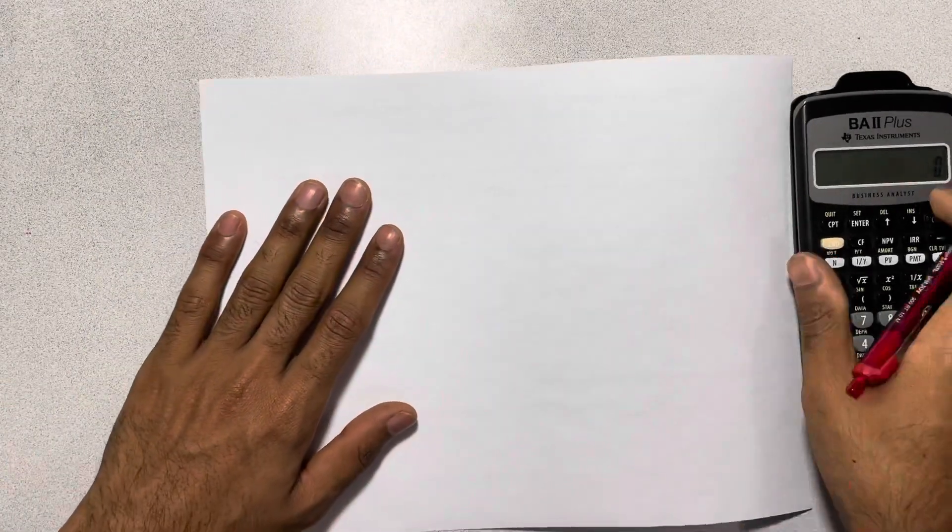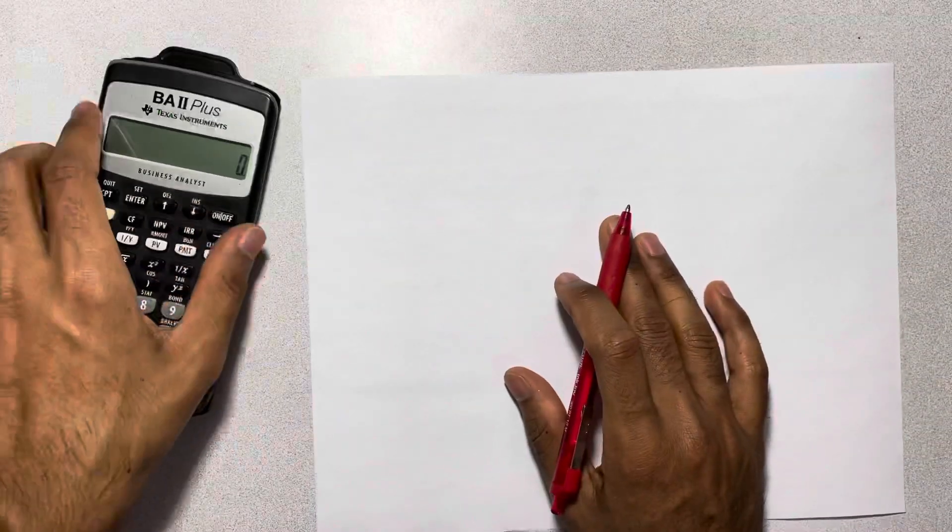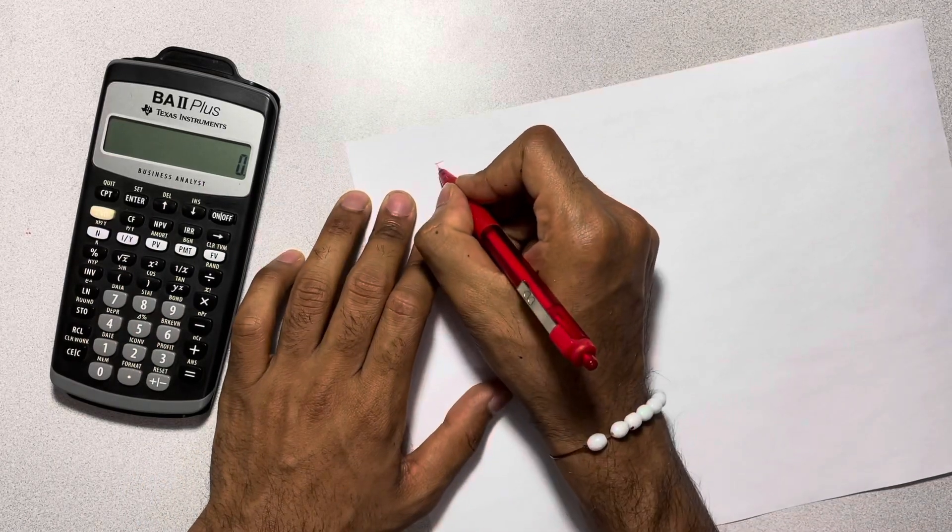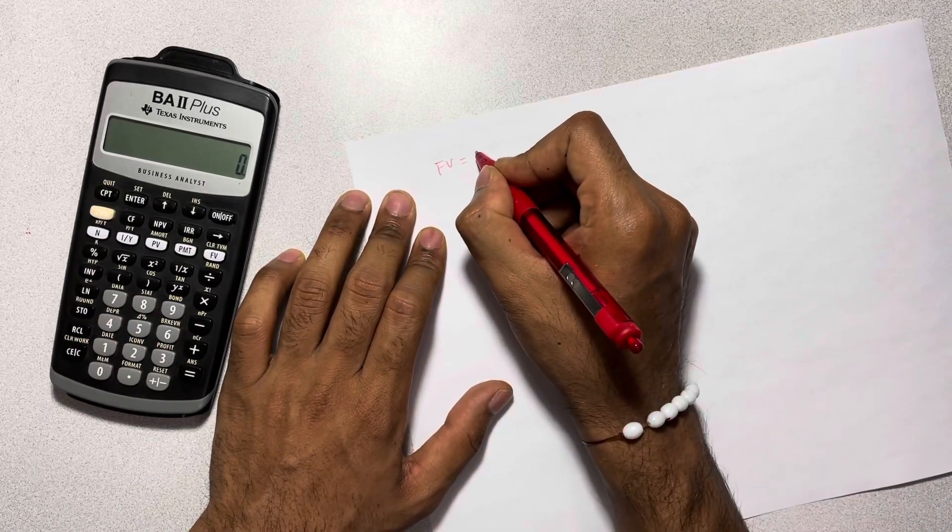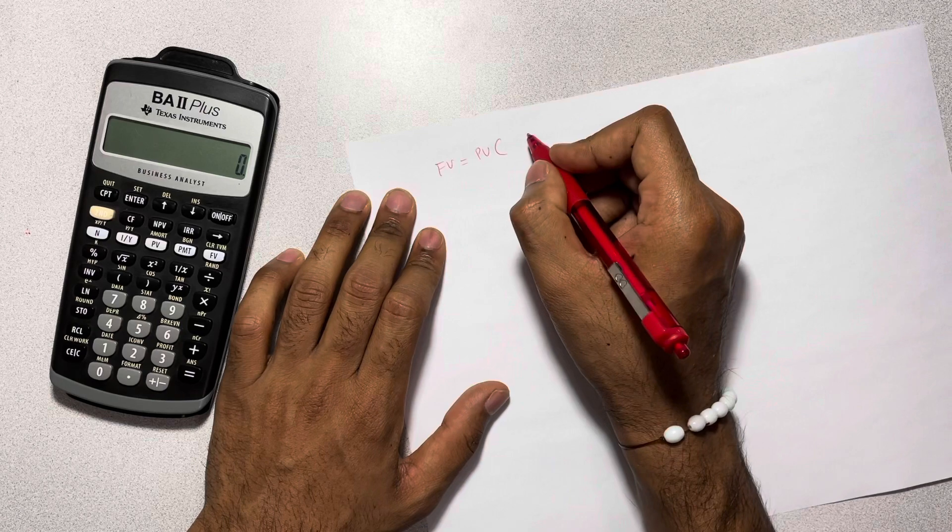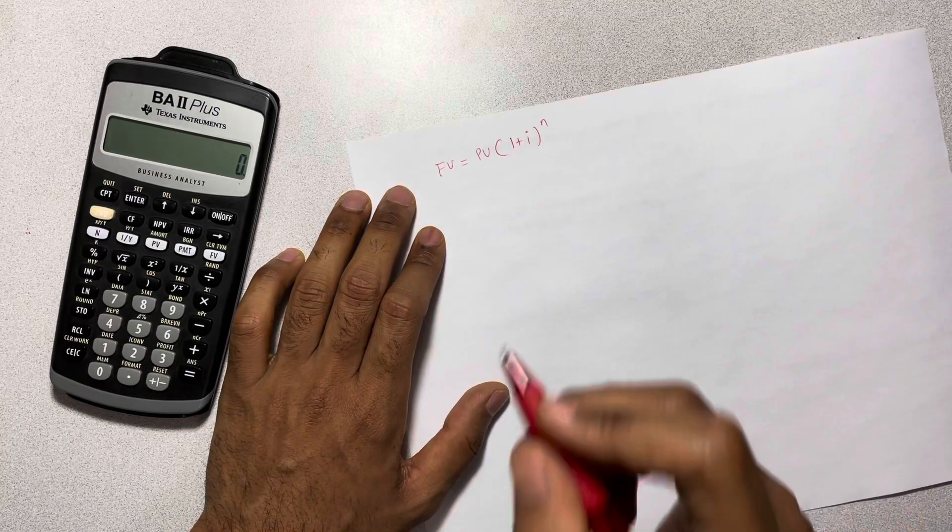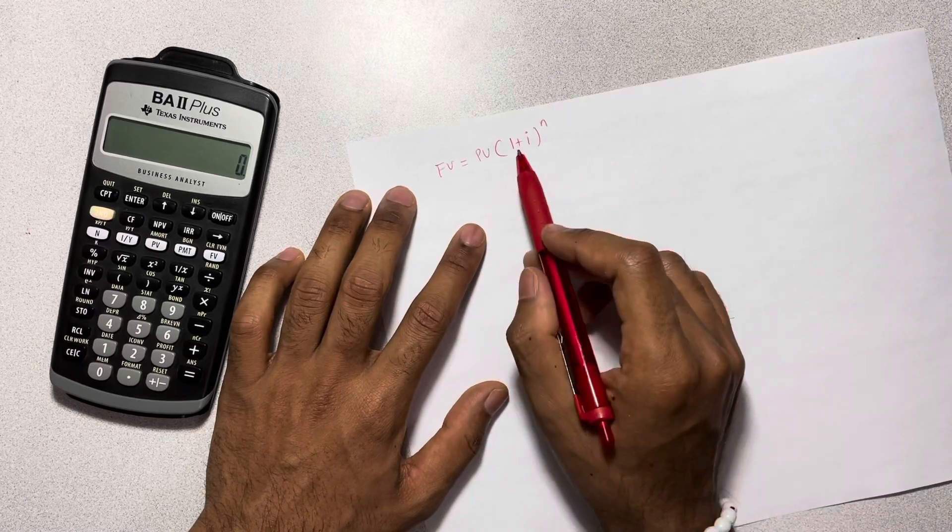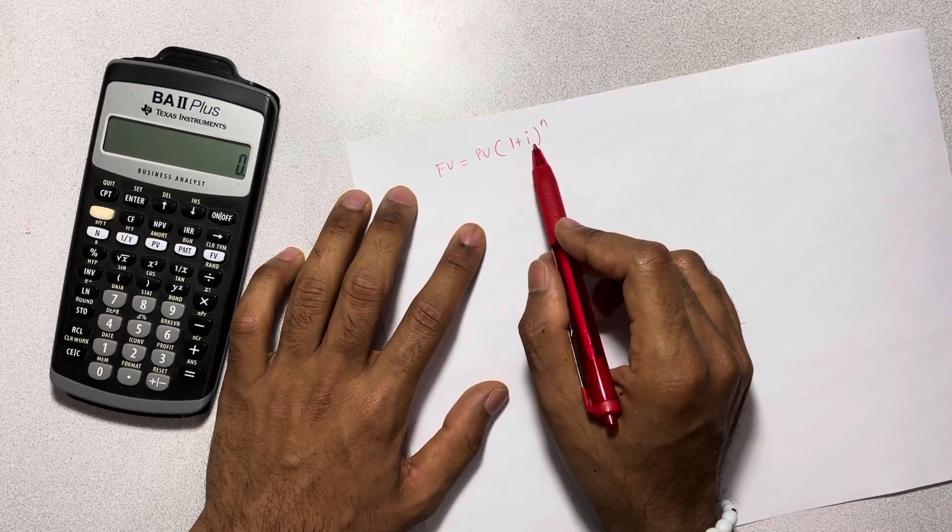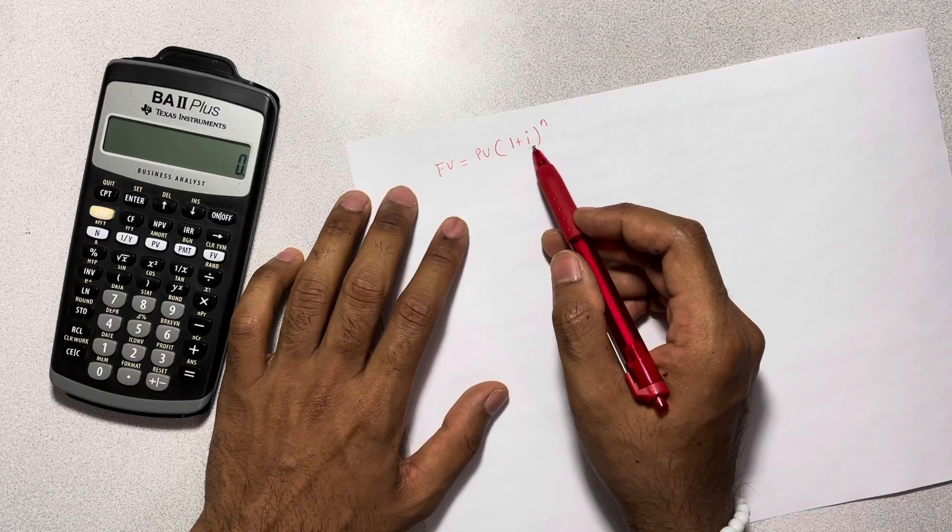So to do that, let's just quickly go over it. We know that future value is equal to present value into 1 plus i to the power of n. Now, our whole goal is to isolate i so that we can solve for it, which is our interest rate.